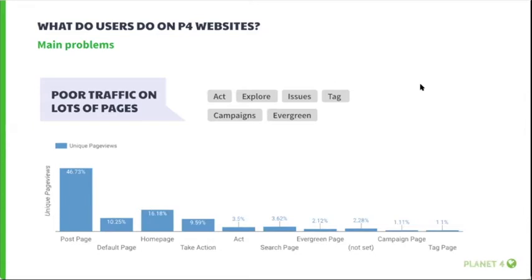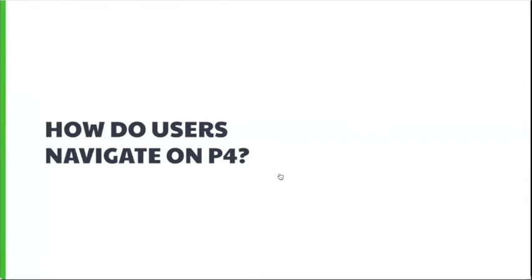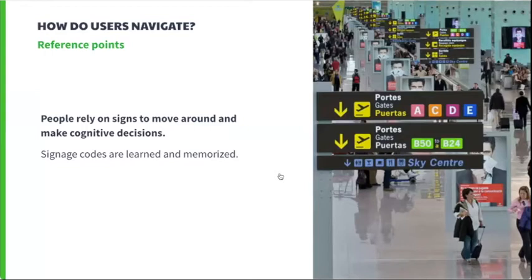Campaign pages have a separate experience from P4 sites, so these pages are basically too hidden in the information architecture. However, act, explore, and tag pages are part of the navigation and accessible — so for these pages, low traffic may point to navigation issues. In unfamiliar physical spaces, we rely on signs to orient ourselves and make cognitive decisions. Online users also look for signs that will help them get closer to the information they seek.